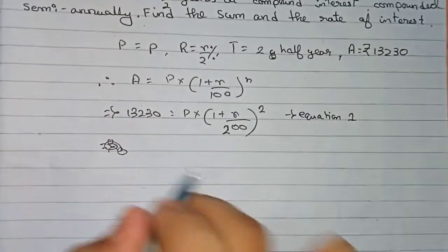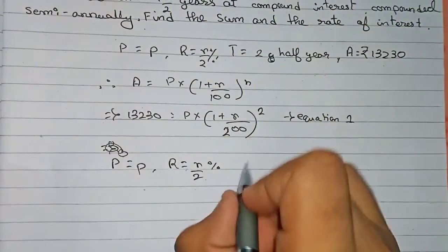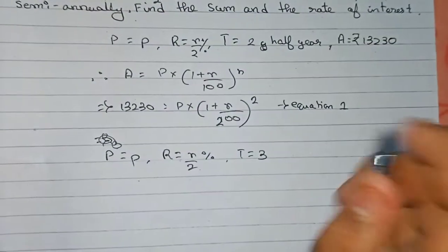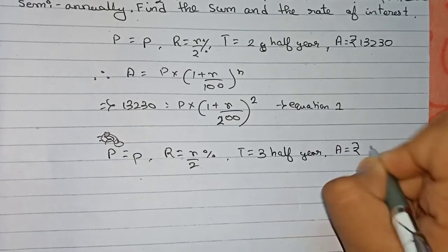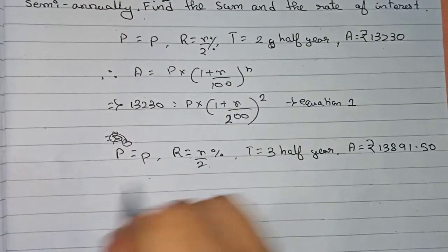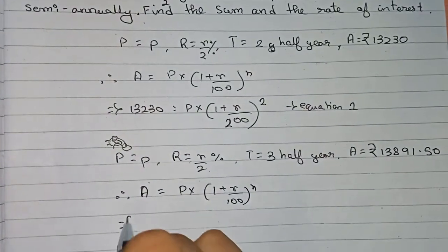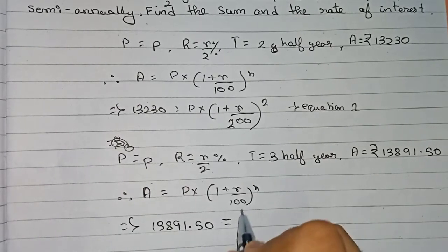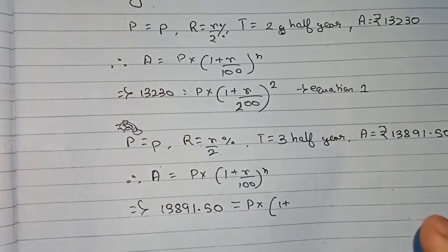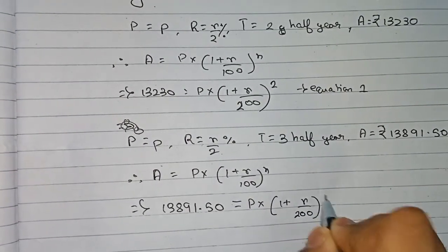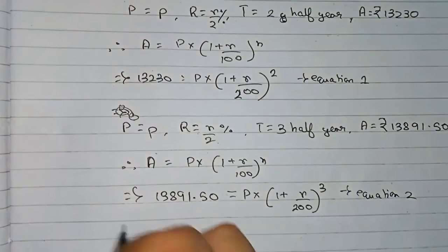For Equation 2, principal is P and rate is r by two percent, same as before for semi-annual compounding. Time is one and a half years, so multiplying by two gives three half-years. Amount is rupees 13,891.50. Therefore: 13,891.50 equals P into one plus r by 200, to the power 3. This is Equation Number 2.